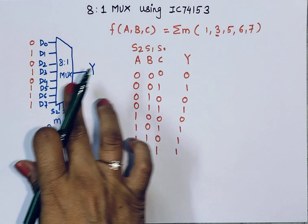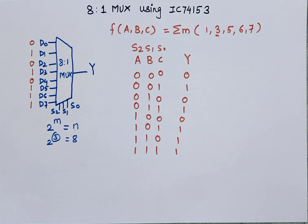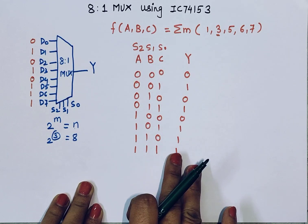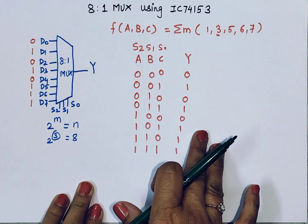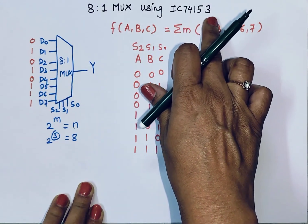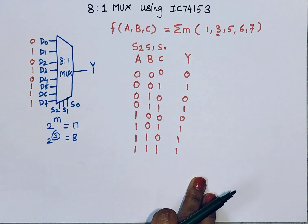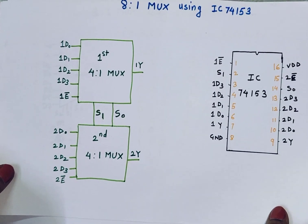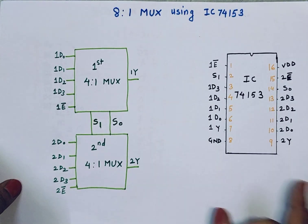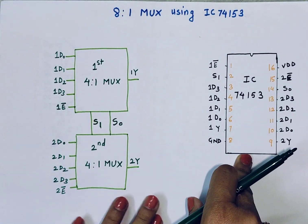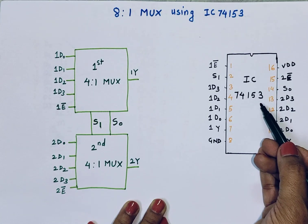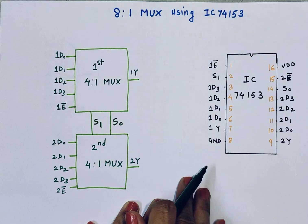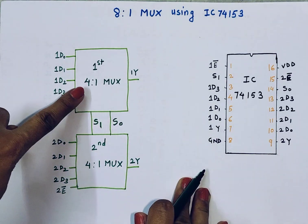The job of select inputs is to select a particular data input and pass that value to the output. Now you need to understand how to implement this 8-to-1 multiplexer using IC 74153. This is the pin diagram of IC 74153 — it shows the internal structure, which has two 4-to-1 multiplexers.